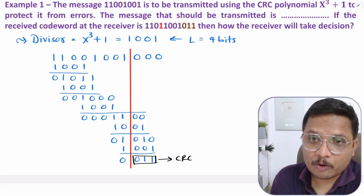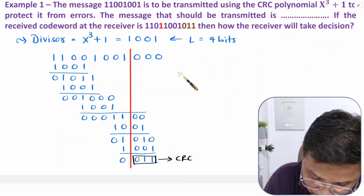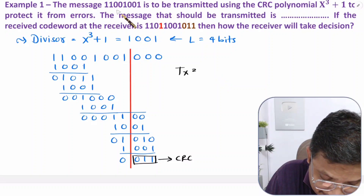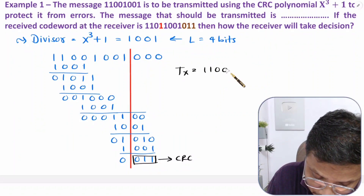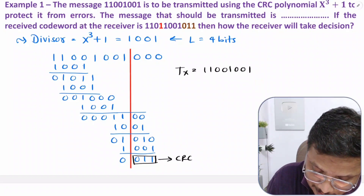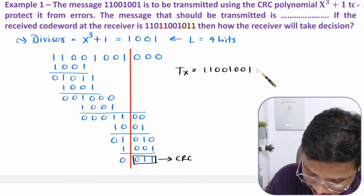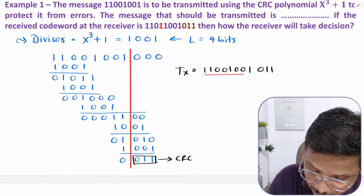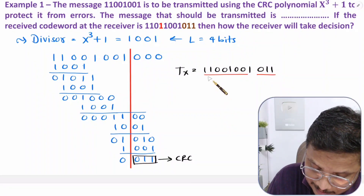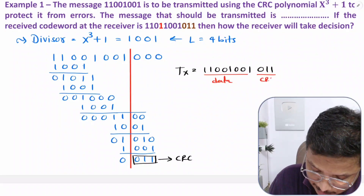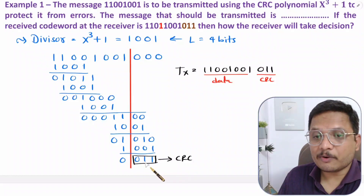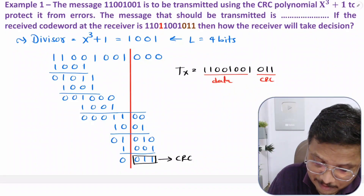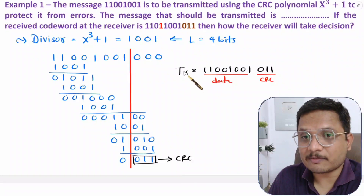The transmitted code word is data plus CRC. The data is 1 1 0 0 1 0 0 1 and the CRC is 0 1 1. So the transmitted code word is 1 1 0 0 1 0 0 1 0 1 1. The CRC calculation is performed by division, and this is the first answer — the transmitted code word.